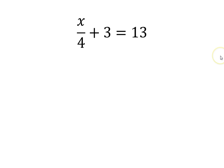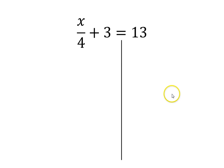We might be able to look at this and see what the value of x is without writing anything down, but we're going to use algebra to show that our answer is the actual answer and have some evidence as to why. The first thing I'm going to do is separate the left side of the equation from the right side by drawing a line there.